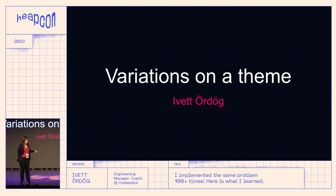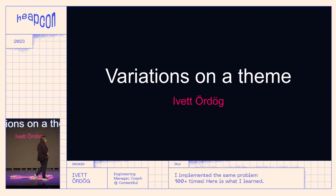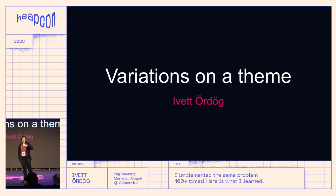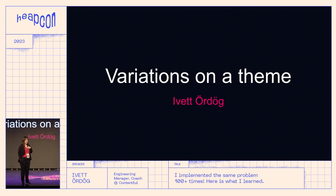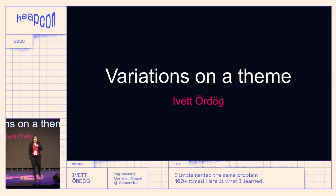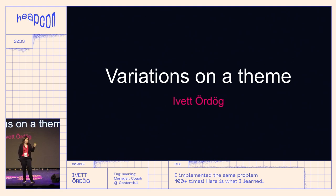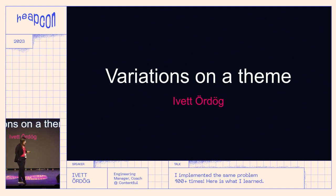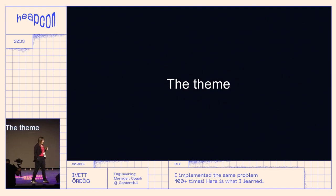By the end of the day you've implemented Game of Life six times. It's really good because every time you sit next to a different person — these are usually pair coding sessions — and every time you learn something different. I've been running code retreats as a facilitator for 10 years, and every other month we had a code retreat. I can safely say I've seen more than a hundred implementations of this one single problem: Game of Life.